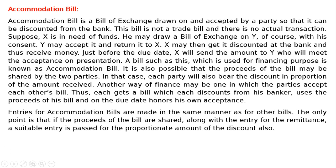Entries for Accommodation Bills are made in the same manner as for other bills. The only point is that if the proceeds of the bill are not shared, along with the entry for the remittance, a suitable entry is passed for the proportionate amount of the discount also.